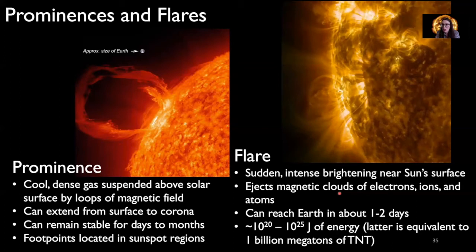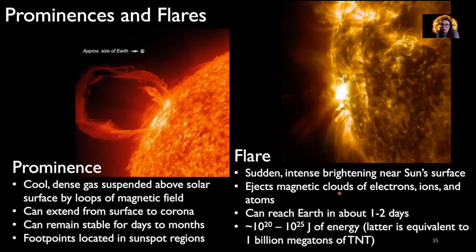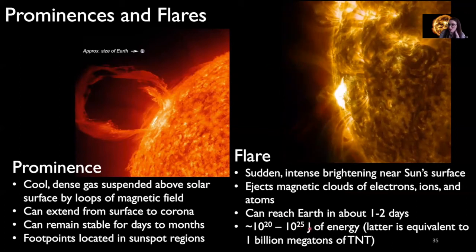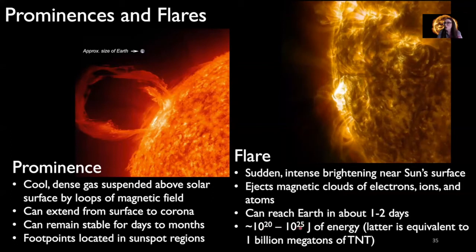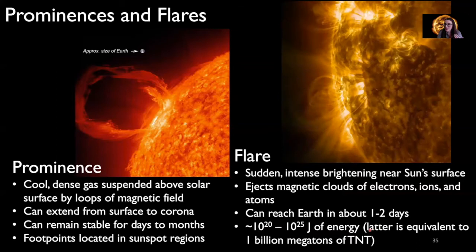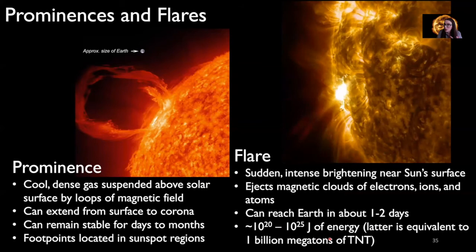Flares happen whenever the sun has built up a lot of stored magnetic energy and it needs to be released. There's a lot of energy associated with this release of stored magnetism. The energy associated with flare events can be around 10 to the 20 to 10 to the 25 joules. This is equivalent to one billion megatons of TNT going off at one time — pretty extreme.